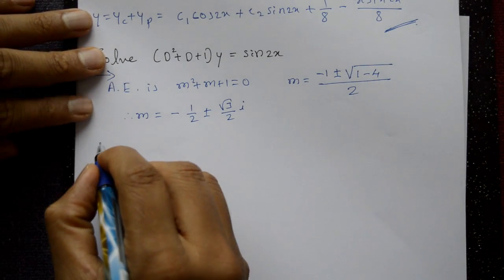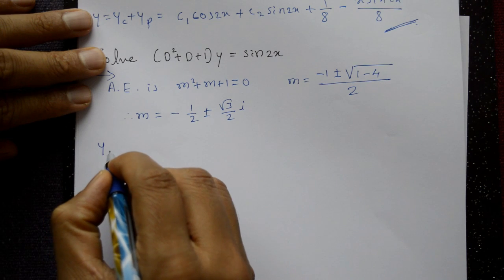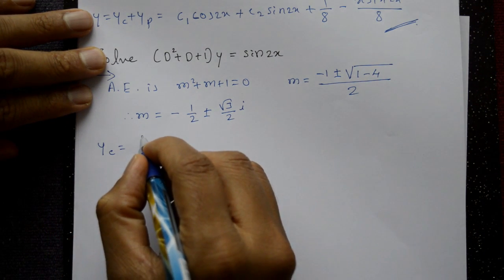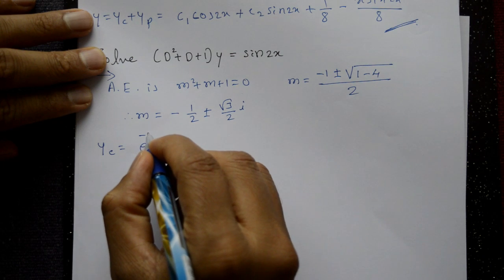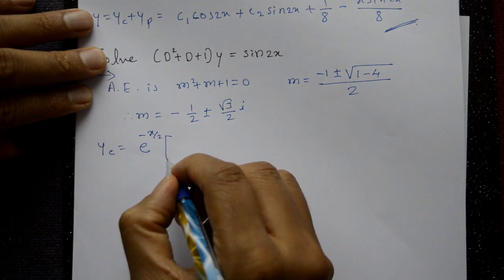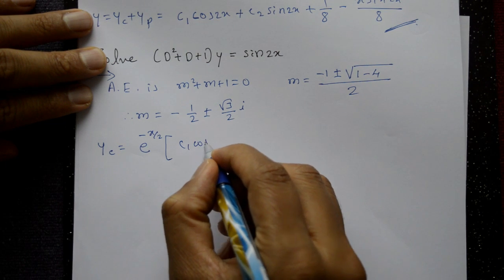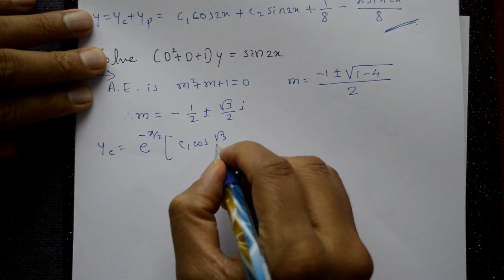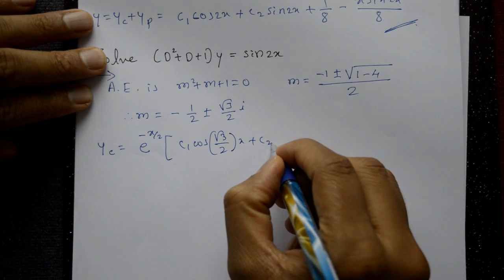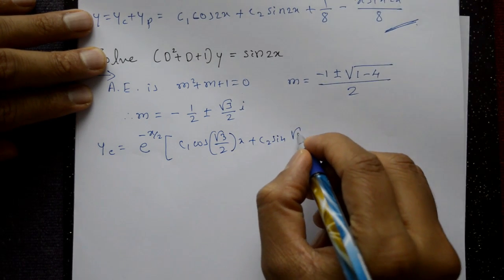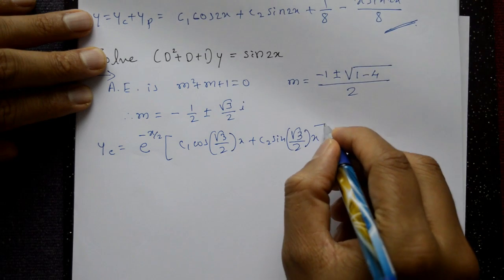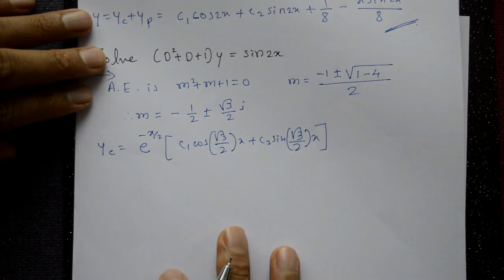These are complex roots. Now write the complementary function: yc = e^(−x/2) [c₁ cos(√3/2 · x) + c₂ sin(√3/2 · x)], where alpha = −1/2 and beta = √3/2.